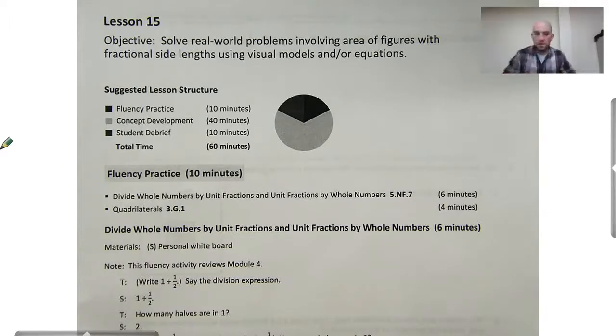Hello, everyone. This is Mr. Kissinger at the Citizenship Academy in Syracuse, New York. This is 5th grade math, module 5, lesson 15.